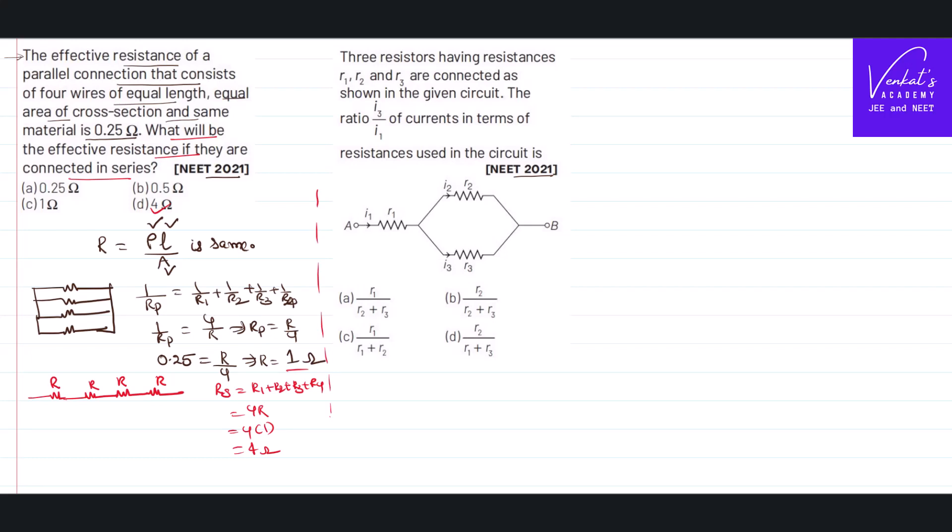Let's have a look at the next question. Three resistors having resistances R₁, R₂, R₃ are connected as shown. The ratio of i₃ to i₁ is... This is i₁. This i₁ is split as i₂ and i₃.